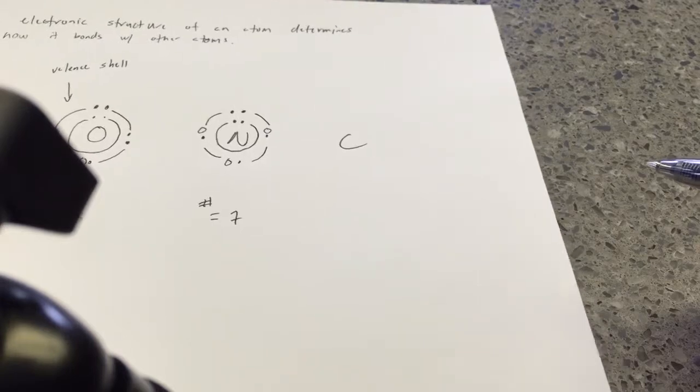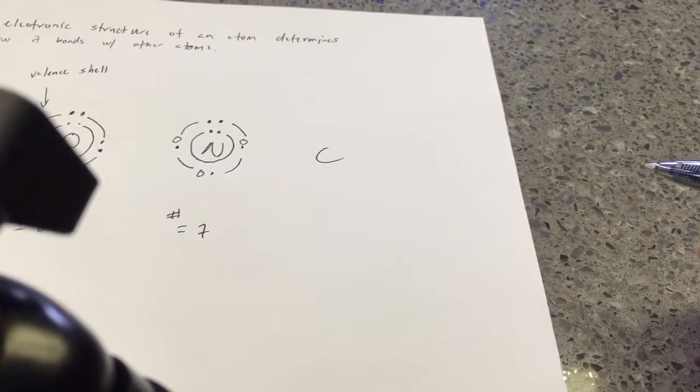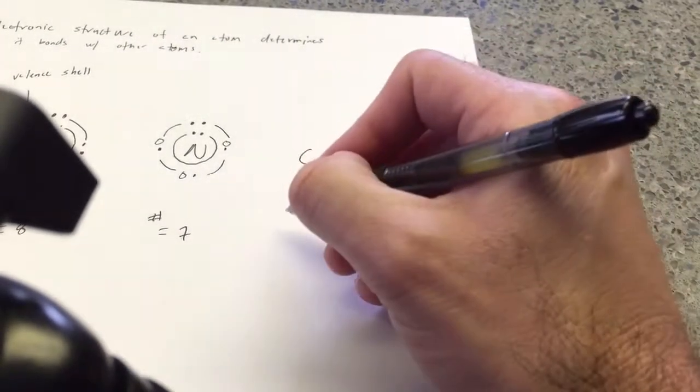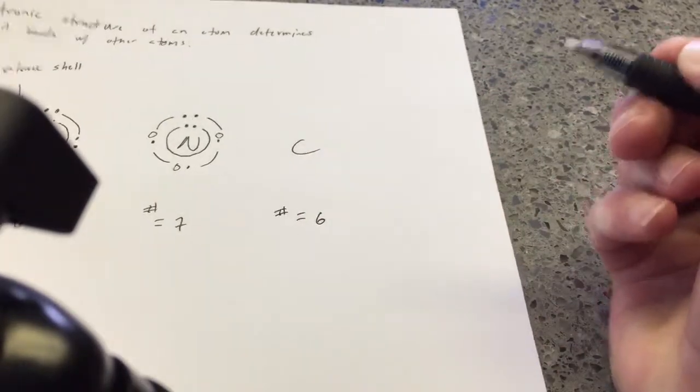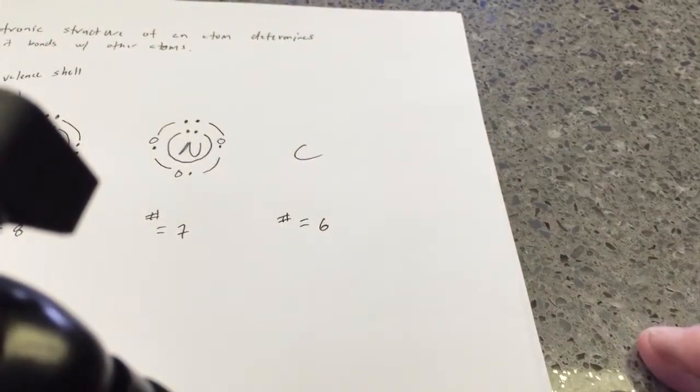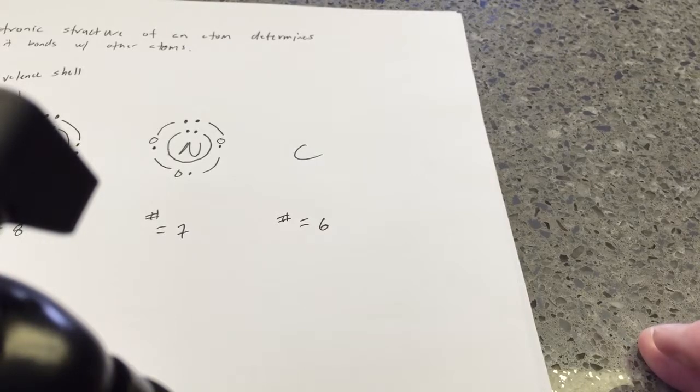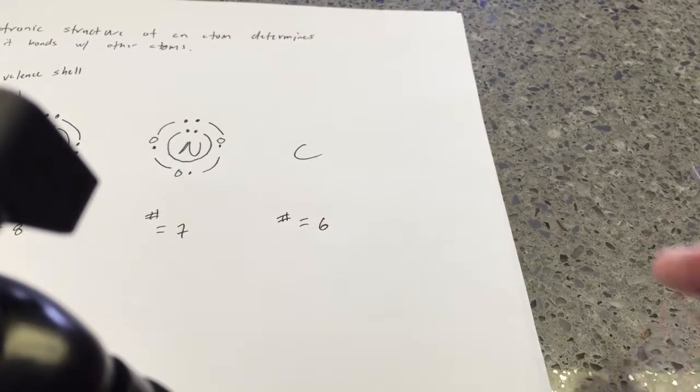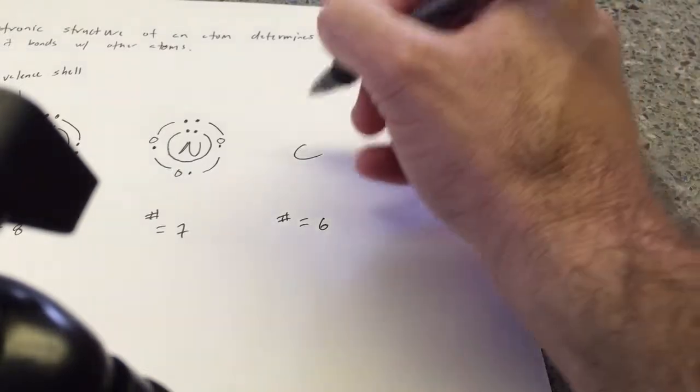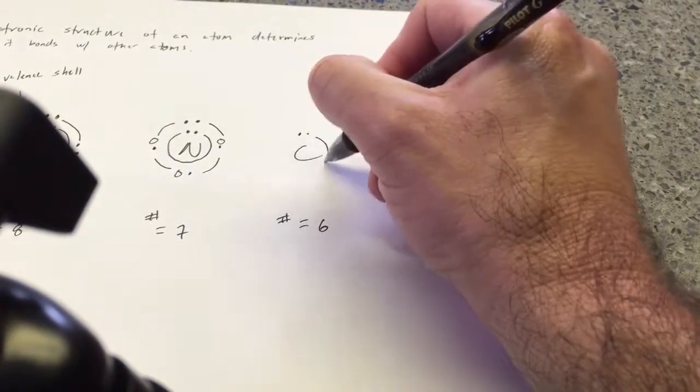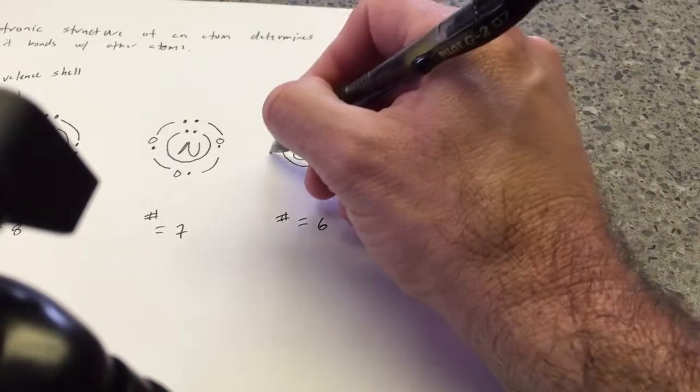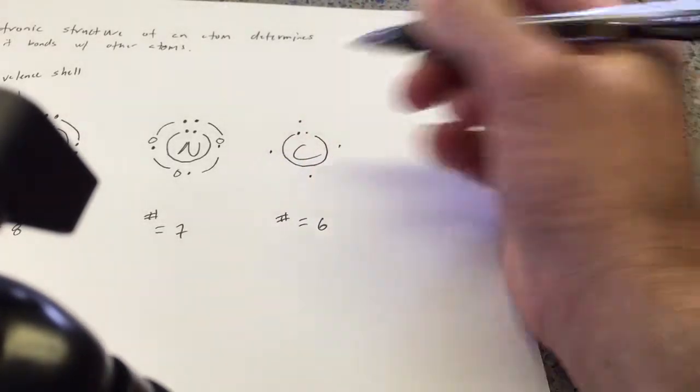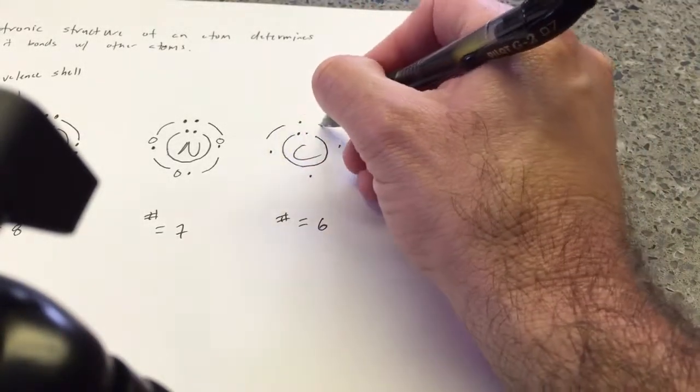Okay, so finally, we move on to carbon. Carbon has an atomic number of six. So just take a moment and think in your head how you would complete carbon. Okay? Thought about it? Good. All right. One, two. Finish the shell. Three, four, five, six. Finish the valence shell.